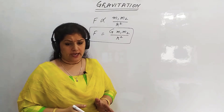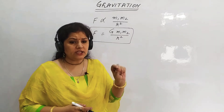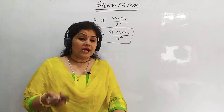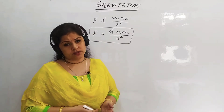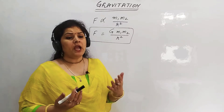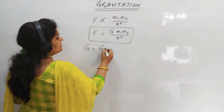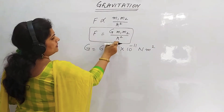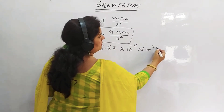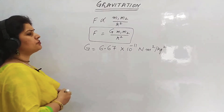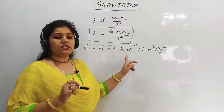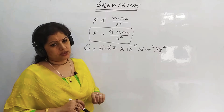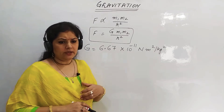This is Newton's universal law of gravitation — universal because it is applicable to each and every body in the universe. It applies between any two bodies here as well as between our solar system and some other solar system. The value of G is 6.67 × 10⁻¹¹ N·m²/kg². This is the SI unit and the value of the universal gravitation constant, denoted by capital G.